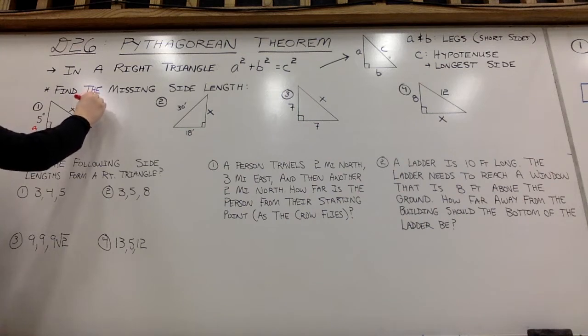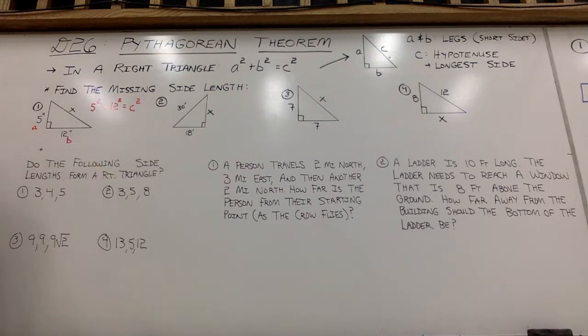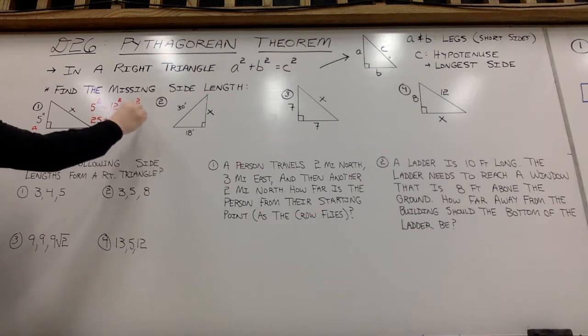So I'm going to plug in a squared plus b squared will equal c squared. So 5 squared is 25. 12 squared is 144. That will equal c squared.